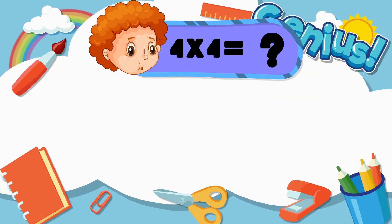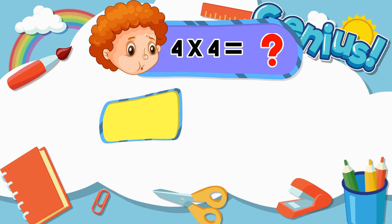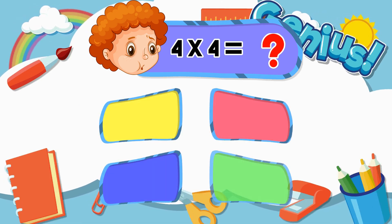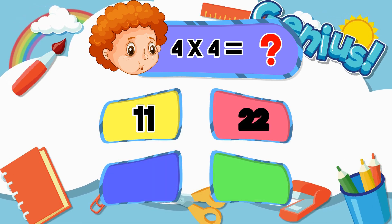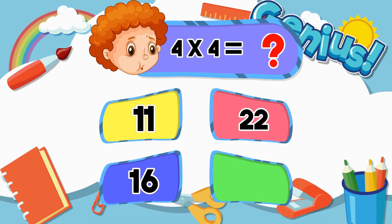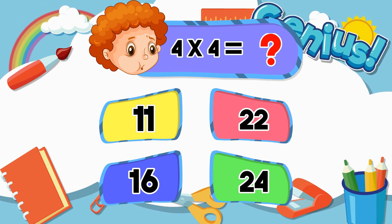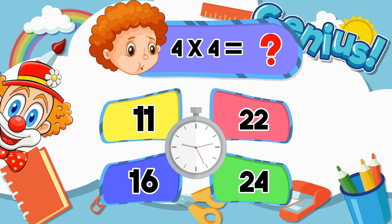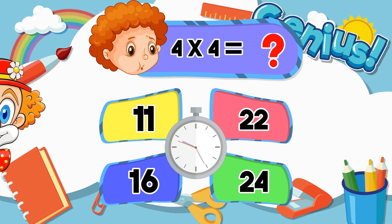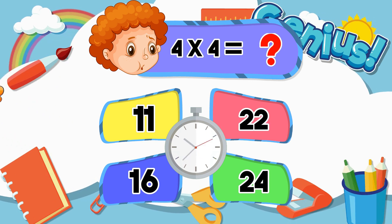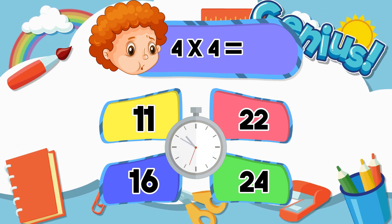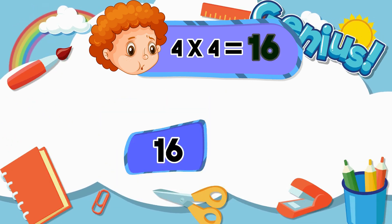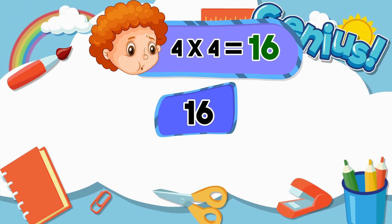What is 4 times 4? Options: 11, 22, 16, 24. Answer: 16.